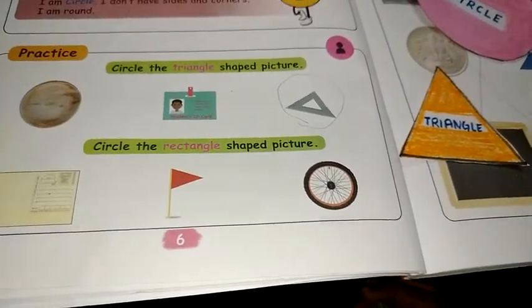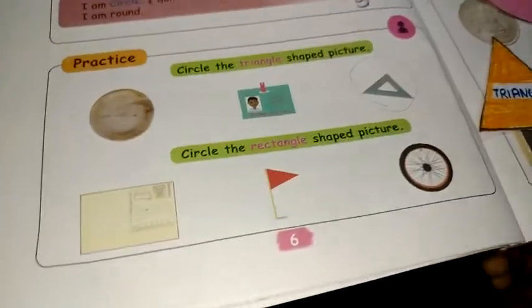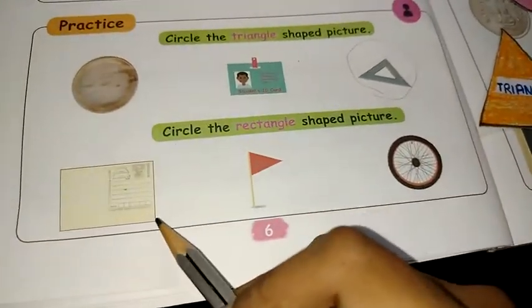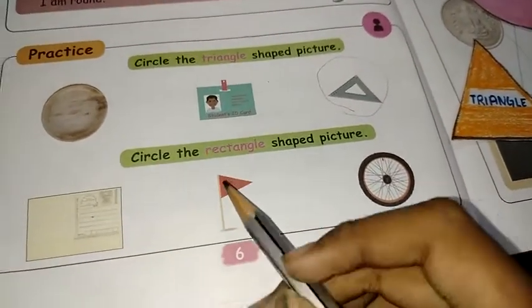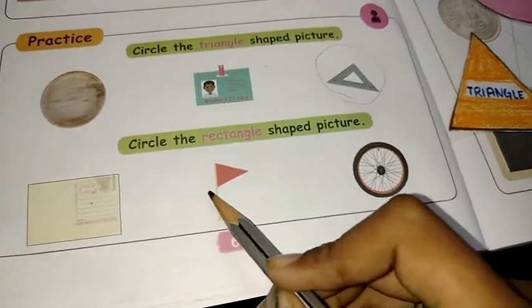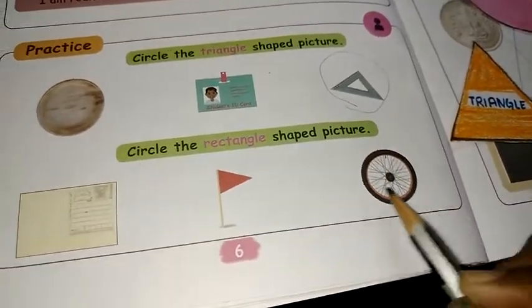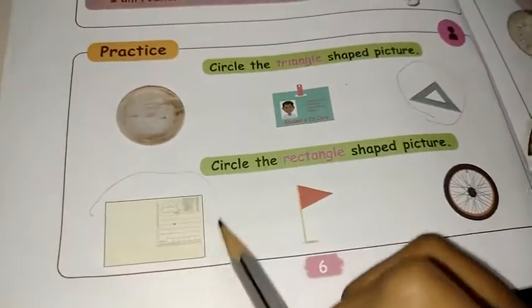Circle the rectangle shaped picture. Is this rectangle? Yes. This, no, it's a triangle. It's a circle. So, circle this.